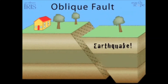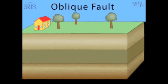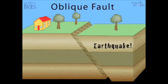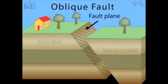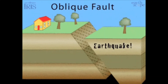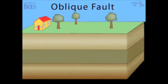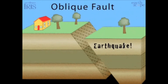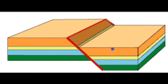The oblique fault is caused by a combination of shear, tensional, and compressional forces. It shows both dip-slip and strike-slip motion. Can you tell the type of fault represented in the picture shown below?